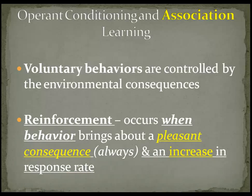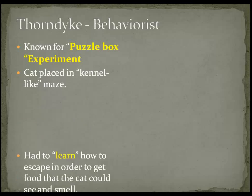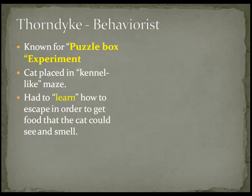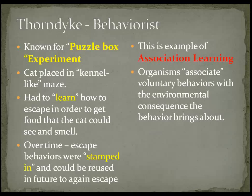Reinforcement occurs when a voluntary behavior brings about a pleasant consequence and an increase in the response rate of that behavior. So reinforcement always means there's a pleasant outcome, and the behavioral response that brought about the consequence increases in frequency. Thorndike was an early behaviorist known for his puzzle box experiment, in which he placed a cat in a maze-like box. Outside, the cat could smell and see food, so it had to navigate obstacles to escape and get that food. Over time, the behaviors seemed to be stamped in and could be used quickly to escape — an example of association learning.